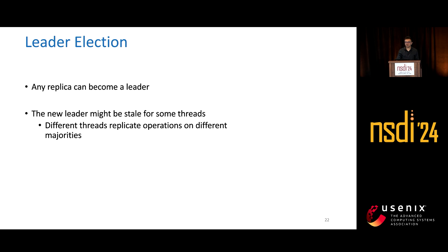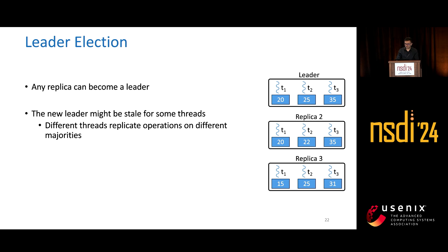This can happen because different threads replicate their operations on different majorities. In this scenario, the leader has the latest operations for the three threads at sequence numbers 20, 25, and 35. If the leader fails here, we see that either replica 2 or 3 can become the leader, but replica 2 is stale for thread 2, whereas replica 3 is stale for threads 1 and 3.